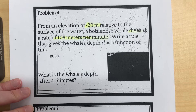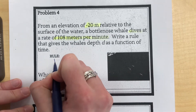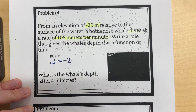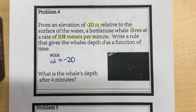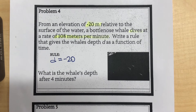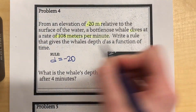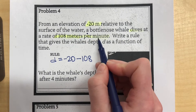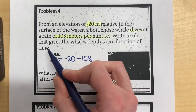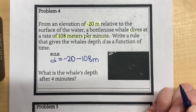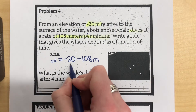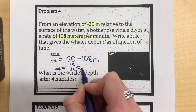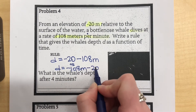To write the rule, we start with D for depth. Where did we start? At negative 20 meters — that's where we are at time zero. The whale is diving down at a rate of 108 meters per minute, getting lower by 108 meters per minute. That 'per' means multiplying by the number of minutes, which we don't know — that's the function of time. So the rule is D equals negative 20 minus 108T, or equivalently D equals negative 108T minus 20. You could use T for time or M for minutes.